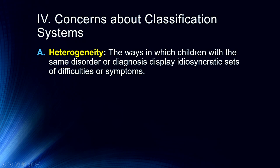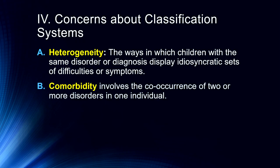Key concerns about classification systems include heterogeneity — the ways in which children with the same disorder or diagnosis display idiosyncratic sets of difficulties or symptoms. One child is not going to be just like another; one child with depression is not going to look like another child with depression. Comorbidity involves the co-occurrence of two or more disorders in one individual — it's very common for someone to have both anxiety and depression. Stress and anxiety are risk factors for depression, so they often come together. An individual might also have a personality disorder on top of a mood disorder.